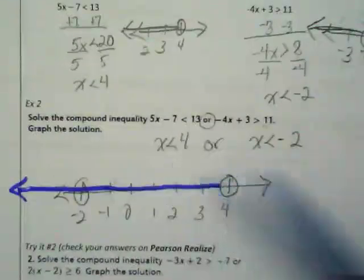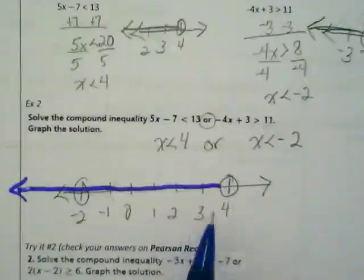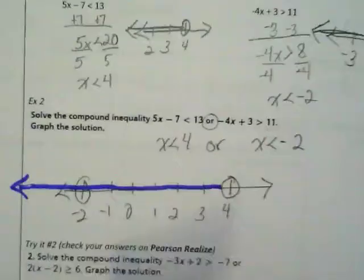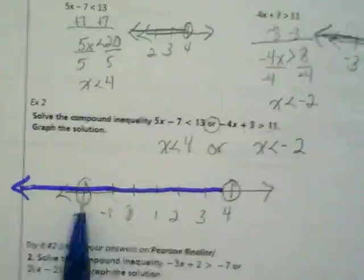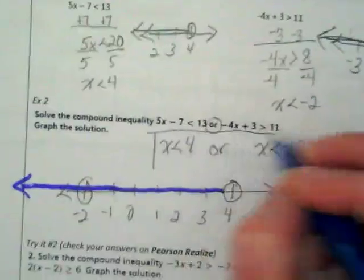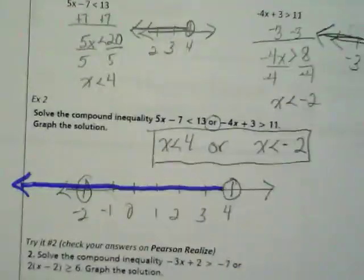So for both of these inequalities, we're seeing them go to the left. For this inequality, its answers start here, but for this inequality, they start here. Since they're compound, it includes everything less than 4.